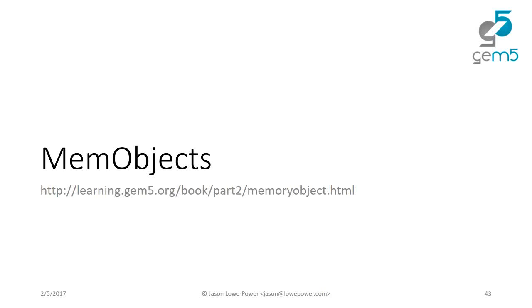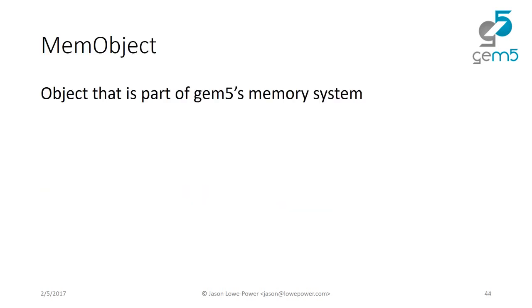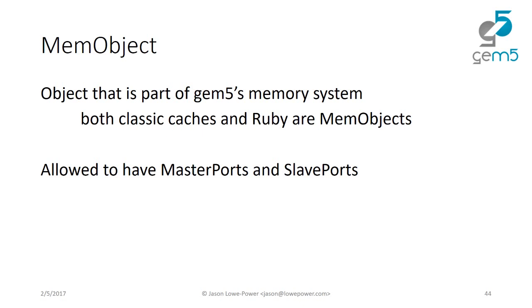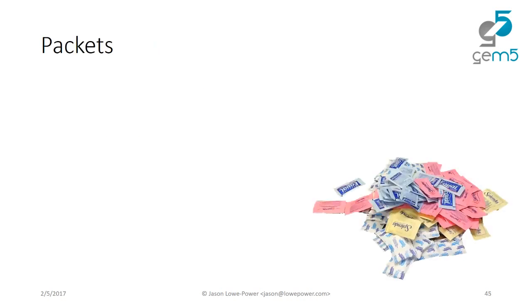Next we're going to talk about MemObjects — objects that interact with gem5's memory system. You have to use MemObjects to get the ports interface to work. The classic caches, crossbars, and Ruby are all MemObjects, so you can connect them in really flexible ways. Ruby is one big MemObject, but all its inputs from cores and outputs to memory are ports. MemObjects are the only things that have master ports and slave ports.